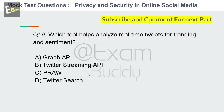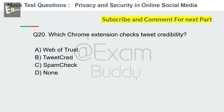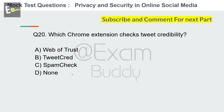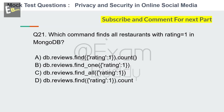Question 20: Which browser extension checks tweet credibility? Options: Web of Trust, Tweet Grid, Spam Check, None. The answer is B: Tweet Grid.